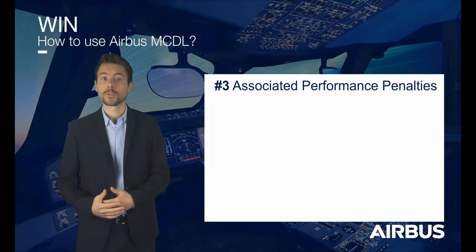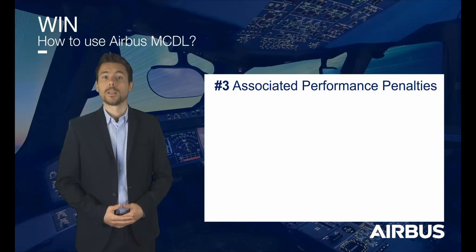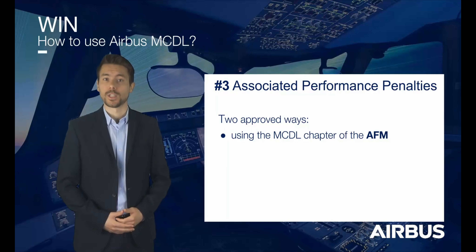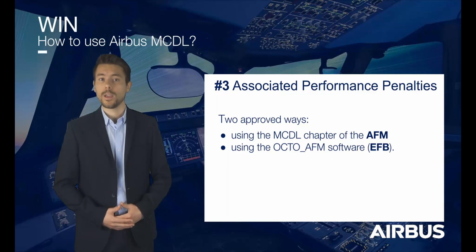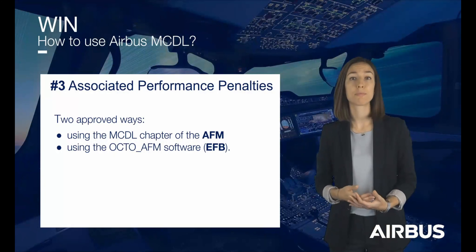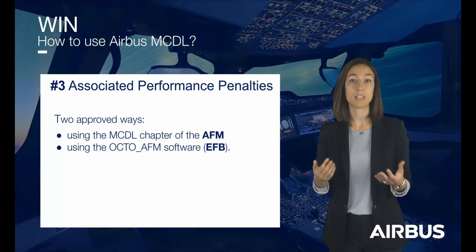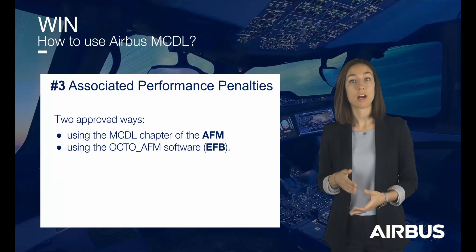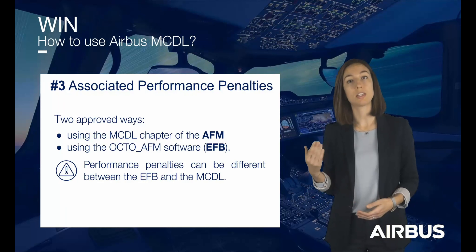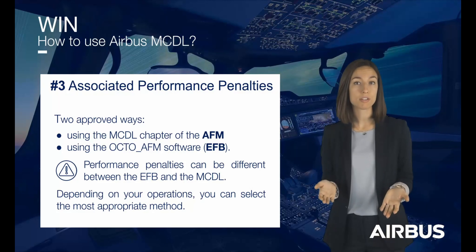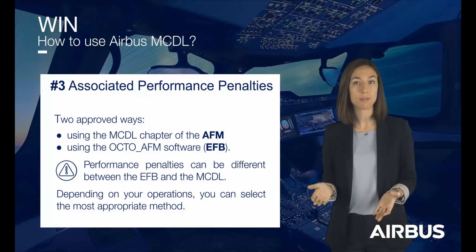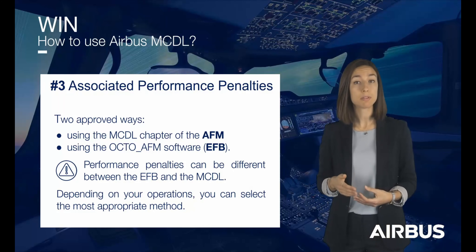Now let's move on to the performance penalties in the MCDL. There are two approved ways of determining the performance impacts of missing items: using the MCDL chapter of the AFM, or using the AFB software, which is the computation engine used by Airbus. The MCDL performance penalties associated with the missing items published in the MCDL are envelope penalties. More accurate penalties can be determined by using the AFB. That is why the performance penalties can be different between the AFB and the MCDL. Depending on your operations, you can select the most appropriate method. Just keep in mind that if no performance data are available in the AFB for a specific item, the penalties published in the MCDL must be used.